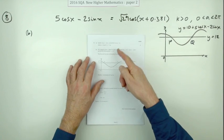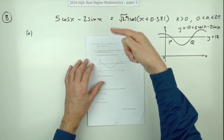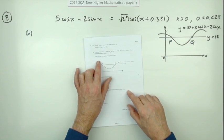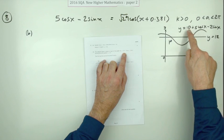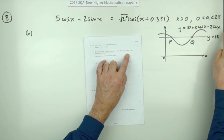So part b. This is where you would use this previous result from part a. There's another four marks which says: here's a sketch, a part of the graph of 10 plus 5 cos x minus 2 sine x.